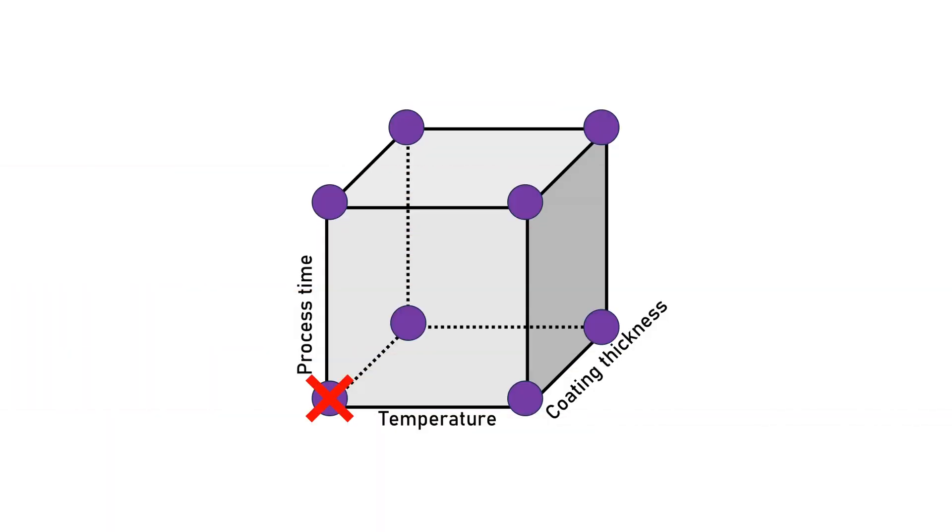If the number of factors becomes too high for a full factorial design, you can go for a fractional design, meaning you only have to do a fraction of the runs that you'd need for a full factorial. But of course, there's a catch — you're losing some information.